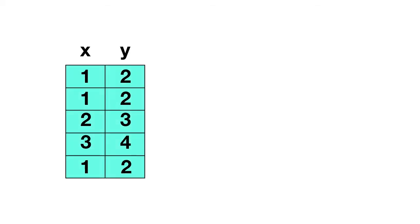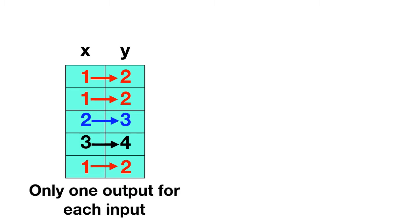Now we can tell whether something's a function or a relation by looking at a table. Here's a table of inputs and outputs. You might notice that the same input, 1, is listed several times. But when you look at the outputs, you can see that an input of 1 always turns into an output of 2. An input of 2 will always give us an output of 3, and an input of 3 will give us an output of 4. So this table shows that there's only one output for each input, and so this table does show us a function.